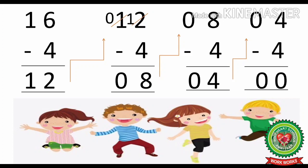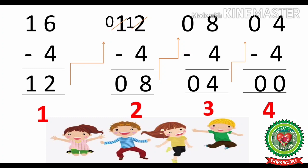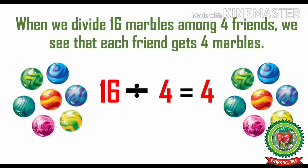As you can see, at the end we have got 0. That means we have completely divided the number by repeatedly subtracting it. Now let us count how many times did we do that subtraction to get 0 at the end: 1, 2, 3, 4 times. So when we divide 16 marbles among 4 friends, we see that each friend gets 4 marbles. That means 16 divided by 4 is equal to 4.